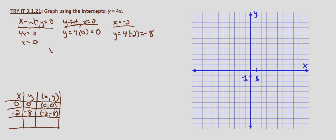And finally let's use x equals 2. So y equals 4 times 2, which equals 8. So when x equals 2, y equals 8, which gives us the point 2, 8.